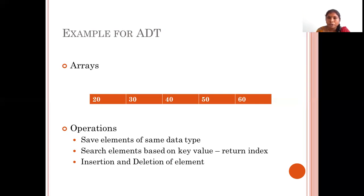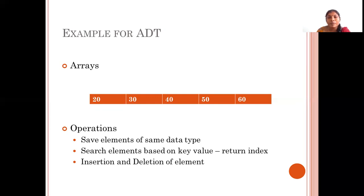From an exam point of view, when asked to explain array abstract data type, linked list abstract data type, stack ADT, or queue ADT, you have to describe in detail the function of that structure, the way data is organized, all the operations that can be performed, and their algorithmic representation. So abstract data type represents any data structure along with its operations.